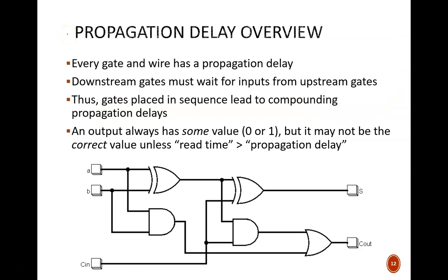Here's an example of a logic circuit. This one happens to be a full adder, but our main focus is not the circuit's function, but instead how long it takes for the correct output to be achieved. We know that every gate and every wire has a propagation delay. We also know that downstream gates, like this OR gate, must wait for inputs from upstream gates, like this AND gate, and before that, this exclusive OR gate. Therefore, gates placed in sequence lead to compounding propagation delays. This means that the delays add on to each other.